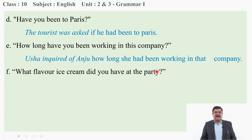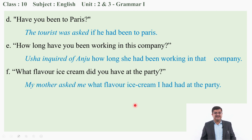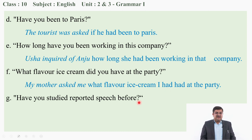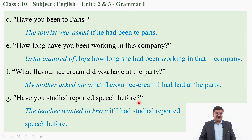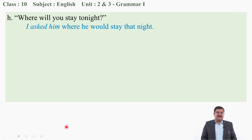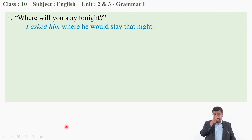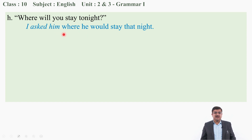'What flavor ice cream did you have at the party?' — My mother asked me what flavor ice cream I had had at the party. 'Have you studied reported speech before?' — The teacher wanted to know if I had studied reported speech before. 'Where will you stay tonight?' — I asked him where he would stay that night. 'Tonight' changes into 'that night'. This is WH interrogative, so the same WH word is used as connective. 'Will' changes into 'would'.